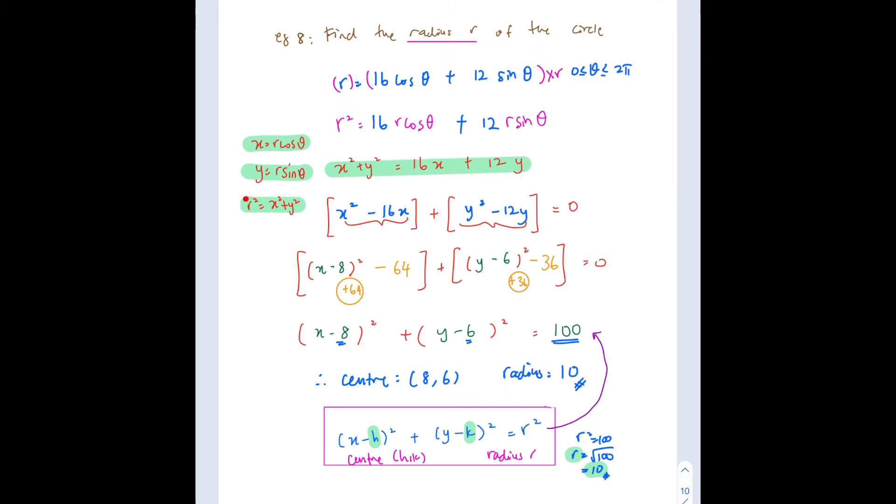So now we know that R squared is equal to x squared plus y squared. So let's substitute R cos theta is x, R sin theta is y. So now everything here is now in rectangular equation because you have x and y. So let's proceed with completing the square.